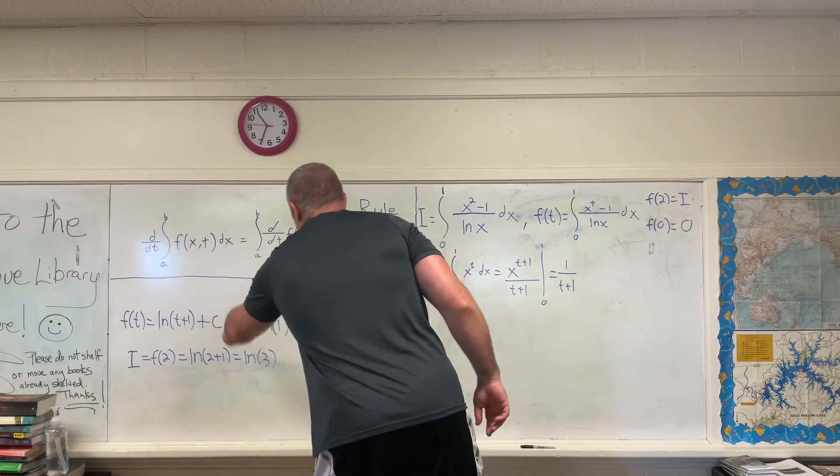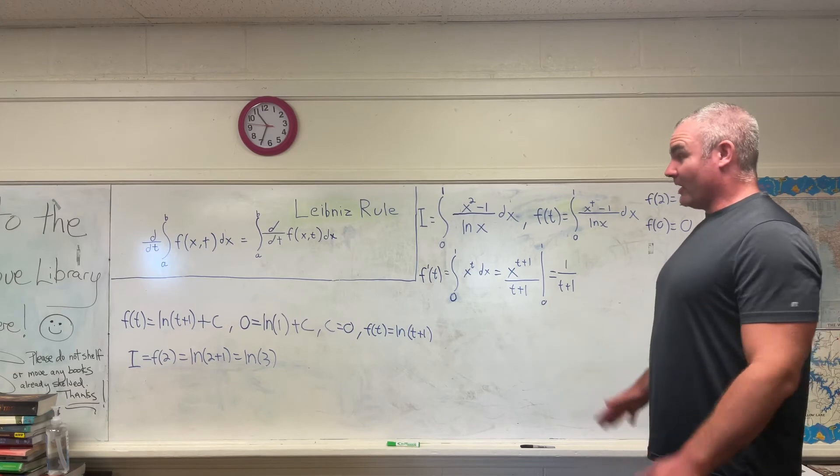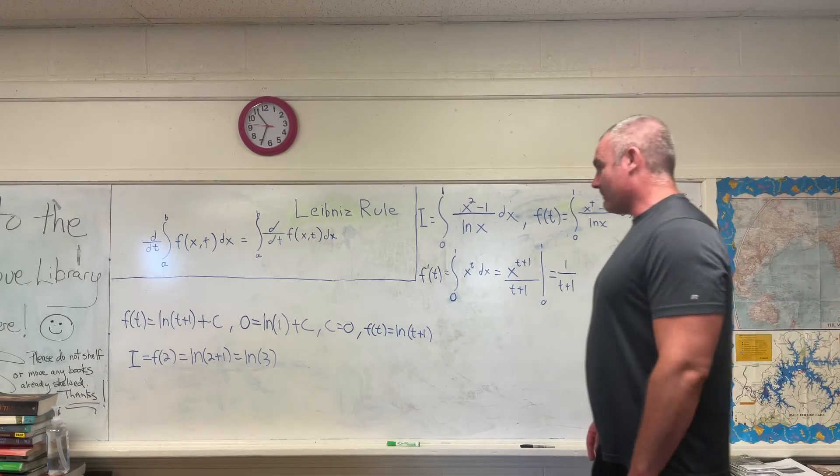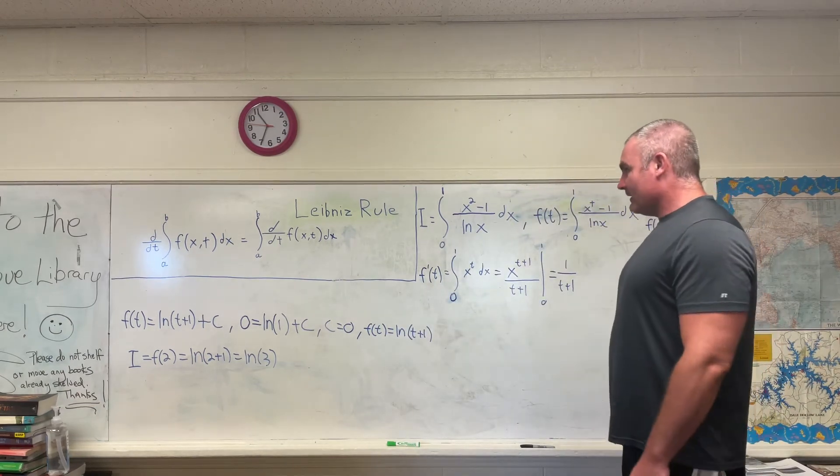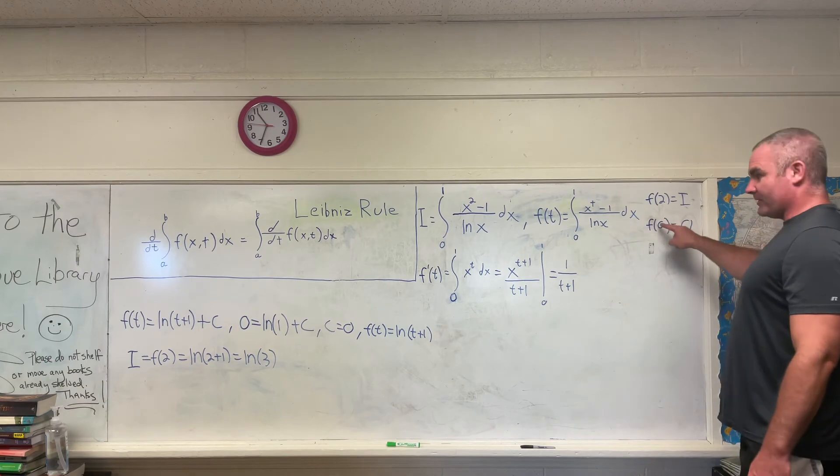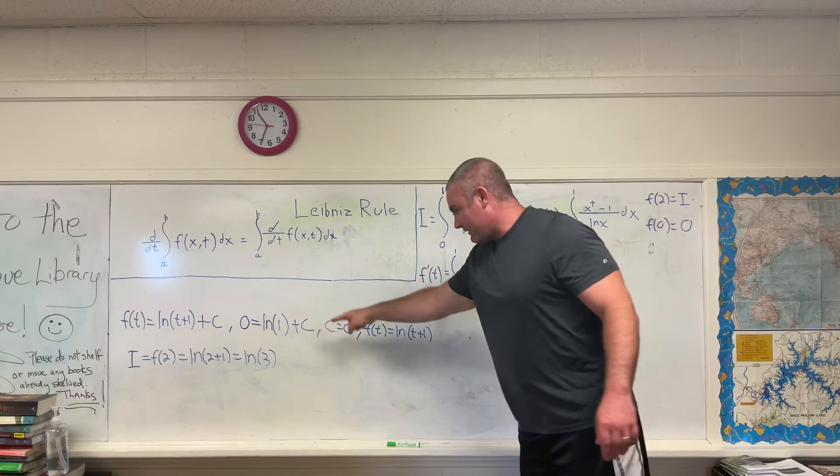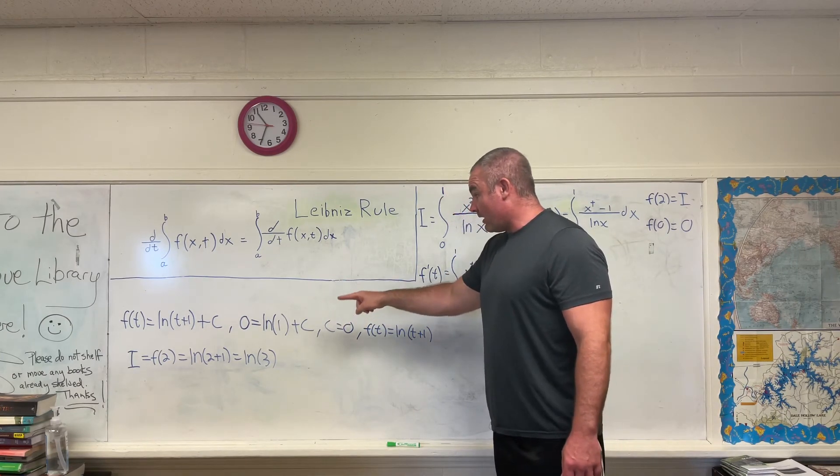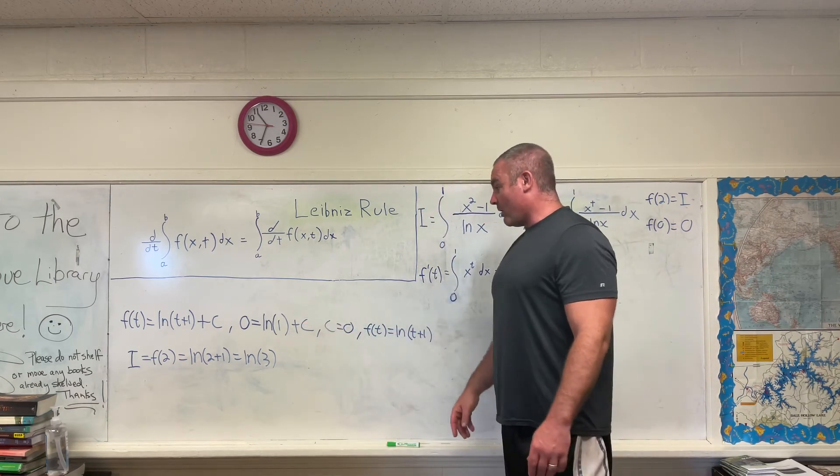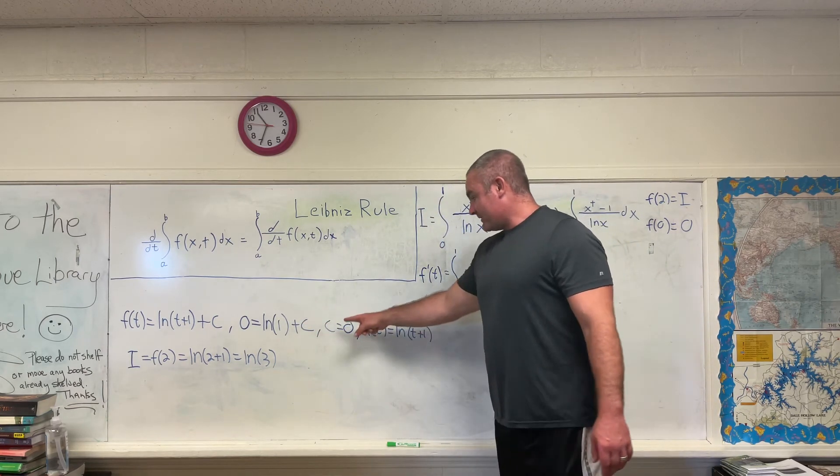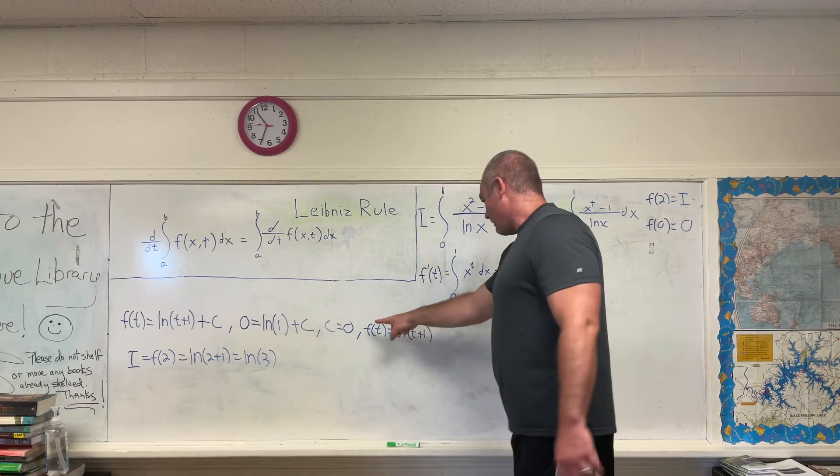And this is important, plus c. I know why my calculus teachers always really harped on the plus c, it's going to be important now. So we have f of t is equal to the natural log of t plus 1 plus c. That's where this comes into play. If we evaluate that at zero, we get zero. That's in the next step right there. Zero is equal to the natural log of zero plus one, which is one. We all know that the natural log of one is zero, giving us c is equal to zero.